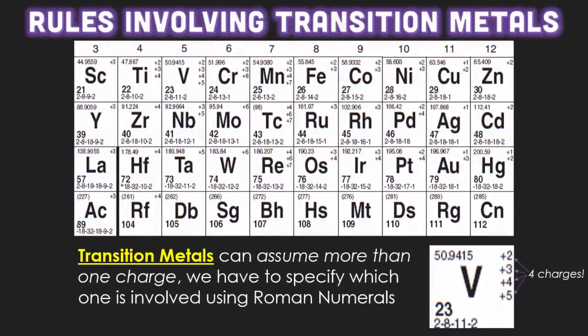Rules that involve transition metals: remember that transition metals are that whole section 3 through 12 and we can assume that more than one charge. Since transition metals can assume more than one charge because they come from the D block, we have to specify which one is involved when we're talking about a formula. So we're going to use Roman numerals.